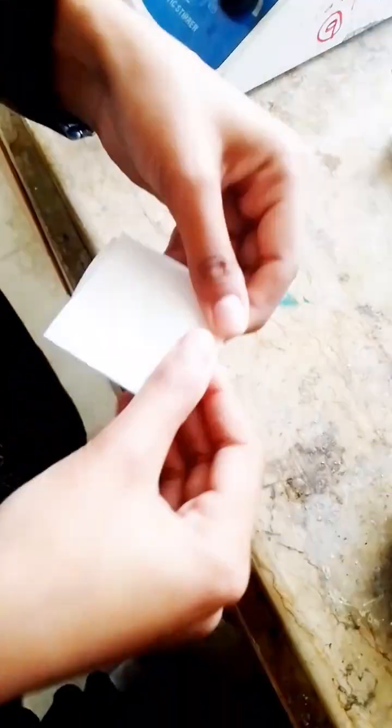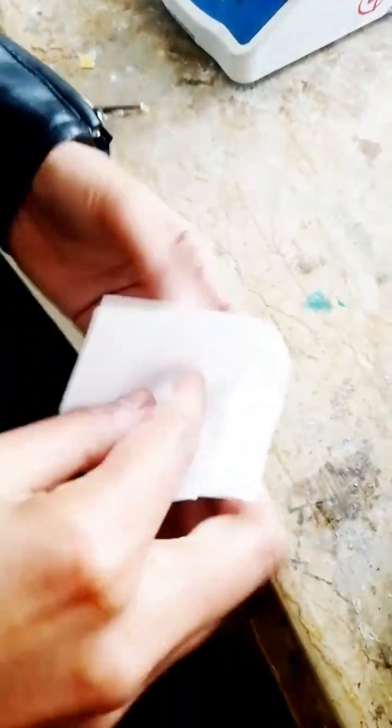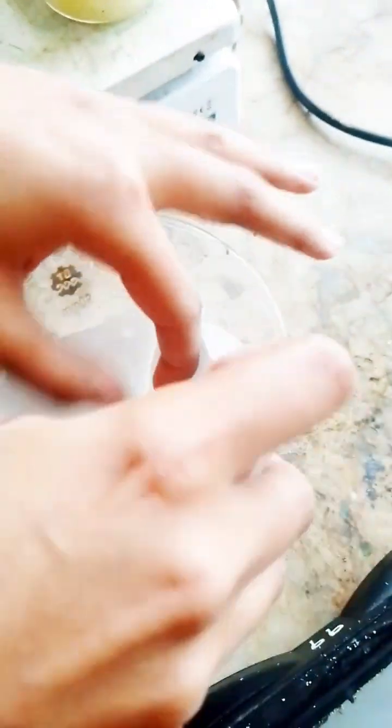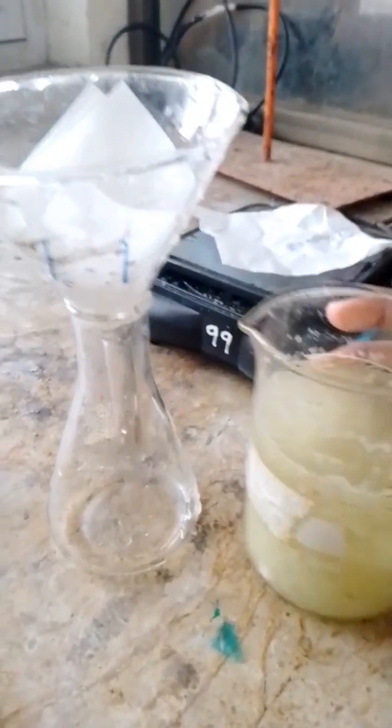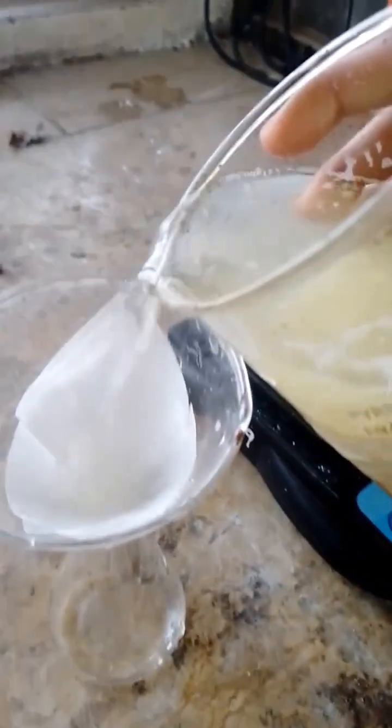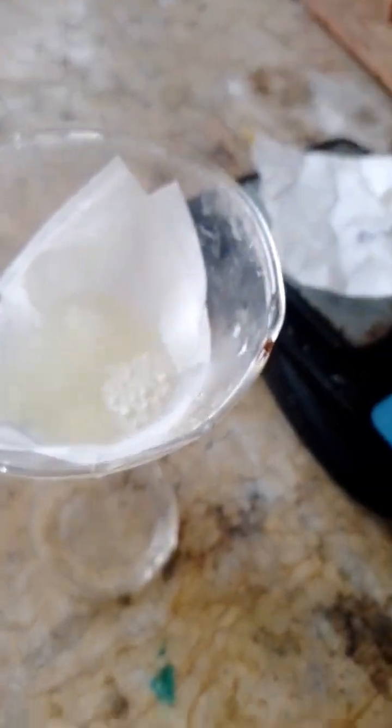After that, you will take a piece of filter paper, fold it like that, and then place the filter paper in a funnel accordingly. After that, you will add the extract gradually, step by step.